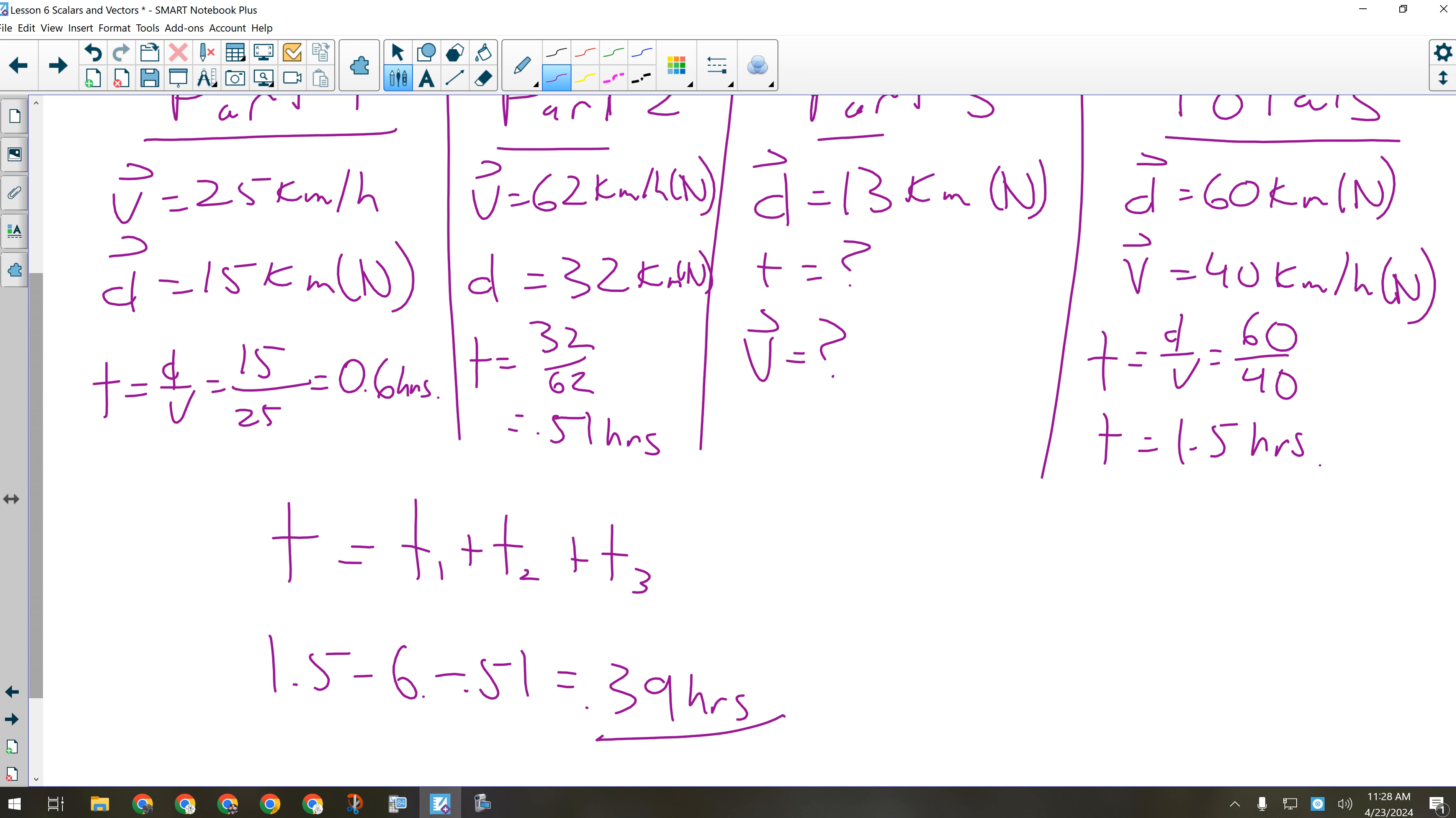Now I got the time for part three, 0.39 hours. V equals D over T and I get about 34 or 33 point something kilometers per hour. I think it's 33.6 or something like that. 34 point, because I rounded off this 0.51 I just remembered in my head. Comes out to about 34, we'll say, kilometers per hour.